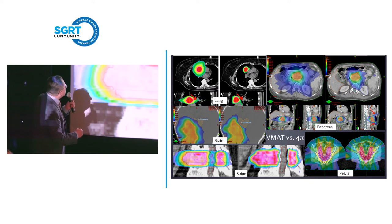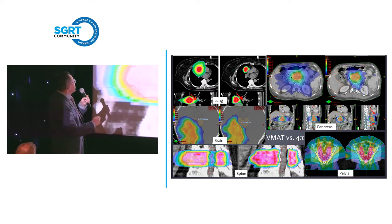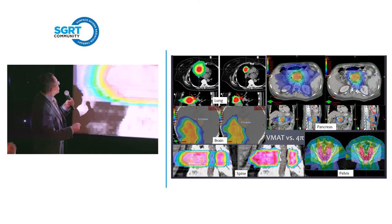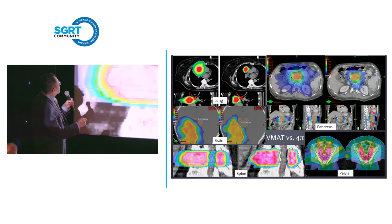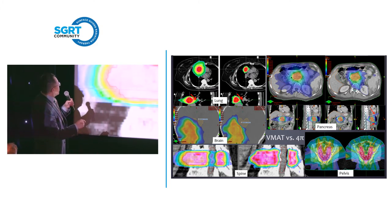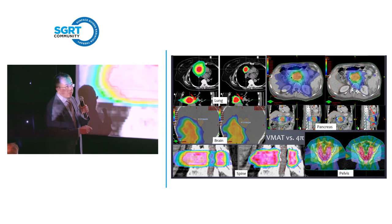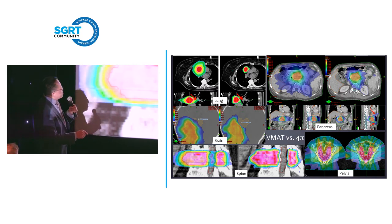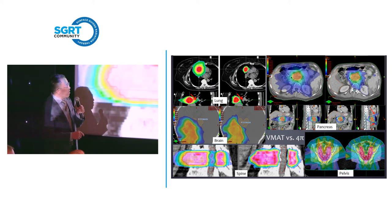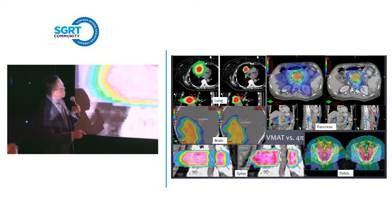This is a retreatment GBM brain patient who had already received close to 60 gray to roughly the same region. The tumor has recurred, and we have to deliver another 25 gray in five fractions to the same volume. Because the target is so close to the brain stem, it becomes dangerous given the amount of high-dose proximity to the brain stem. With 4Pi, we can create a razor-sharp dose gradient between the tumor and the brain stem. The distance between 100% isodose and 50% isodose in this case is 2.9 millimeters.